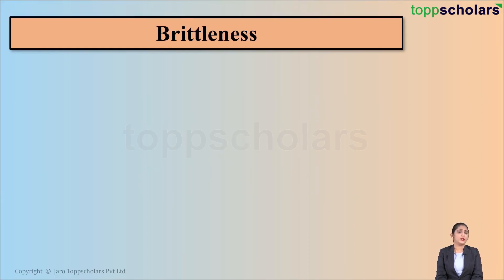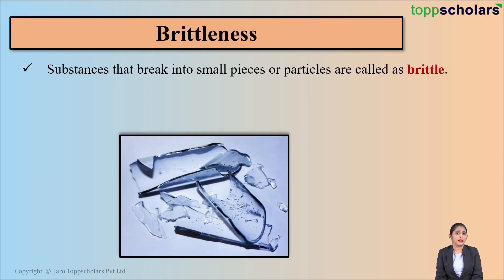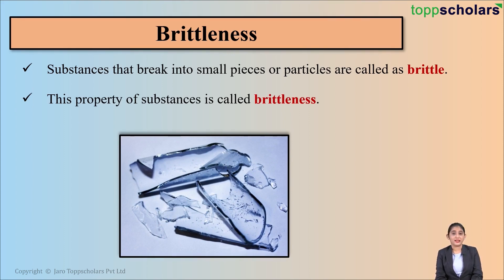Let us first start with brittleness. What do we mean by brittleness? Substances that easily break down into small pieces or particles are called brittle substances. For example, glass — if you try to break glass, it breaks down easily. This property of a substance is called brittleness, wherein substances break into small pieces or particles very easily.